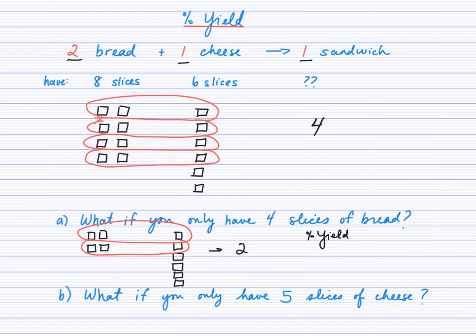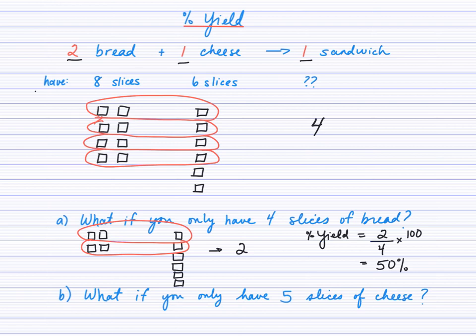We were expecting to make four sandwiches, but someone stole the bread and now we are only able to make two sandwiches. The concept of percent yield, as it works in this analogy, would be taking the two sandwiches we actually made and the four we were expecting, so two out of four times 100 — that's 50%. We would say that reaction would proceed with 50% yield.